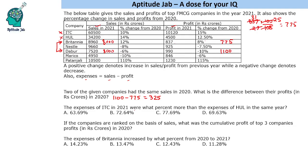Question two: the expenses of ITC in 2021 were what percent more than the expenses of HUL in the same year? Since we are looking at 2021, values are directly given. Looking at the options — 64, 72, 78, 69, or 70 — we can approximate. ITC expenses: 605 minus 101 is approximately 504. HUL expenses: 342 minus 45 is 297, roughly 300.